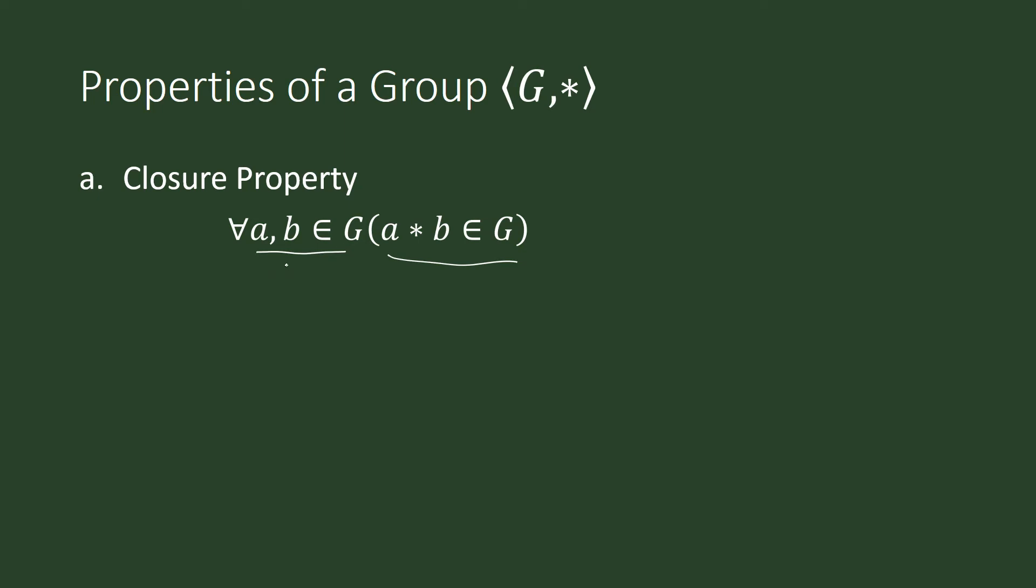If you have two elements from g, and you applied our operation on those two elements, the result is also in g, then you will say that the operation is closed on that set.